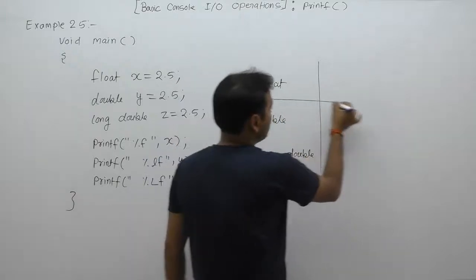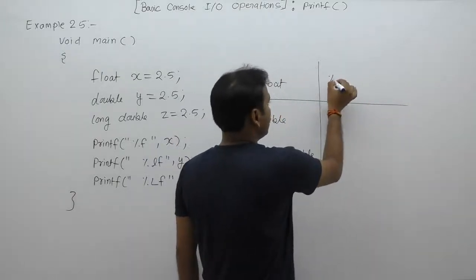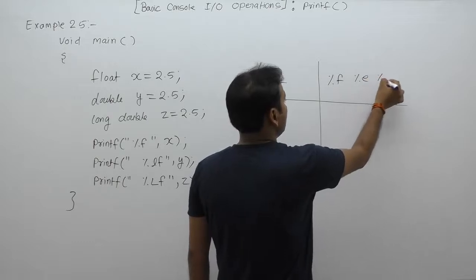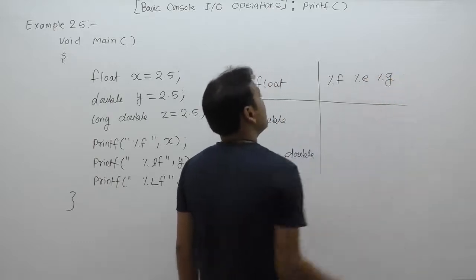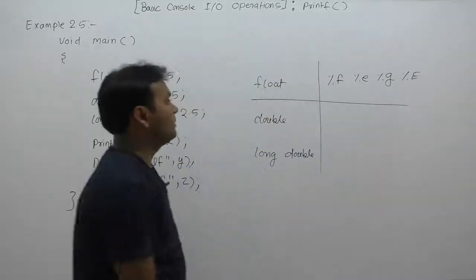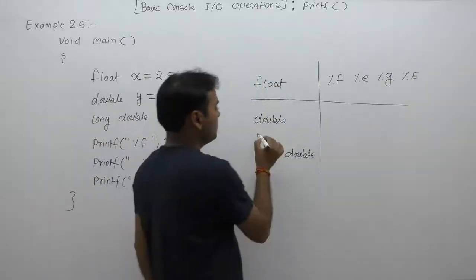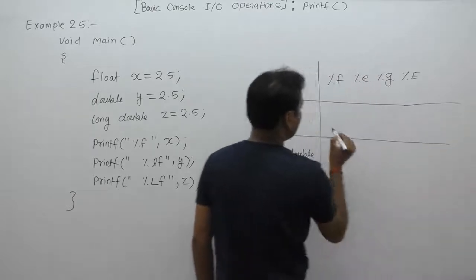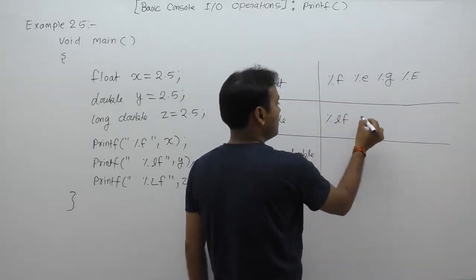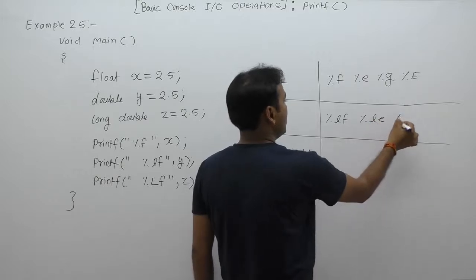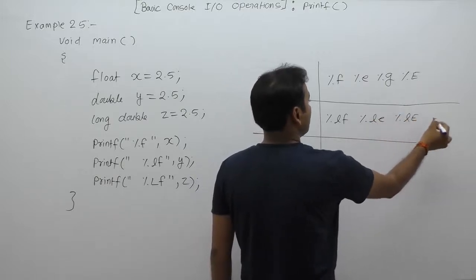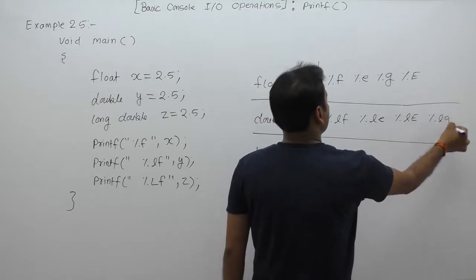Format specifiers for float are %f, %e, %g, or %E. Format specifiers for double are %lf, %le, %lE, %lg.